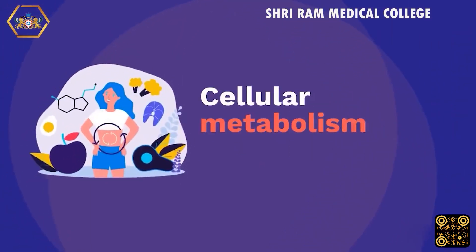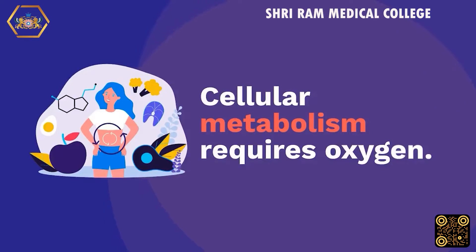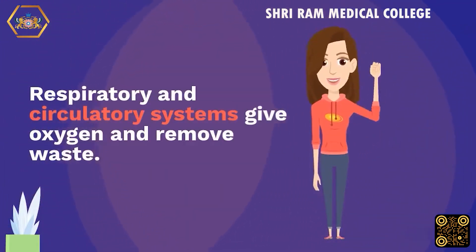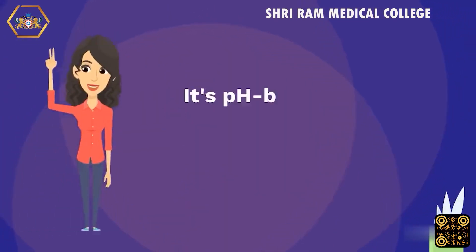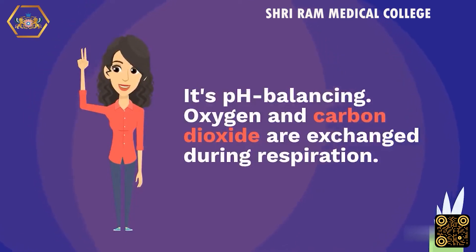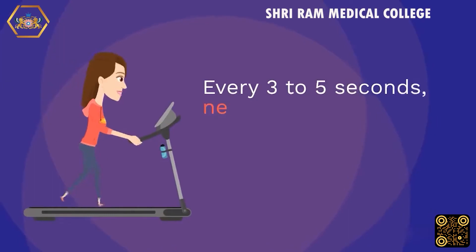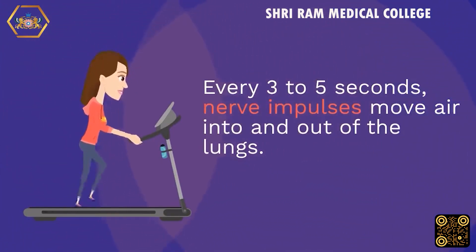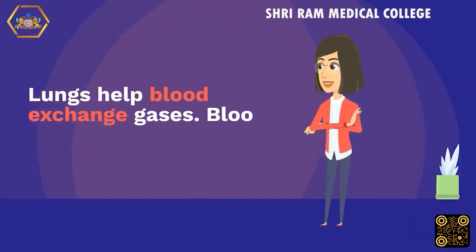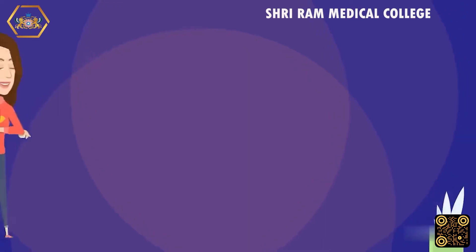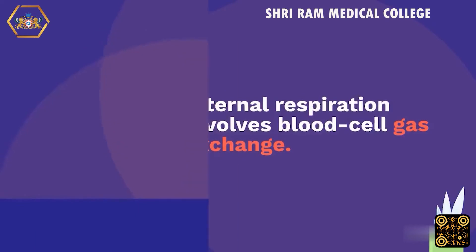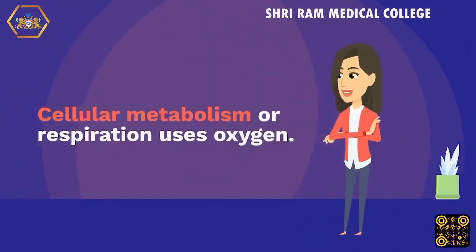The respiratory system's functions go beyond breathing. Cellular metabolism requires oxygen. The respiratory and circulatory systems deliver oxygen and remove waste, and play a role in pH balancing. Oxygen and carbon dioxide are exchanged during respiration. Every 3 to 5 seconds, nerve impulses move air into and out of the lungs. Lungs help blood exchange gases, and blood carries gases between cells. Internal respiration involves gas exchange at the blood cell level.